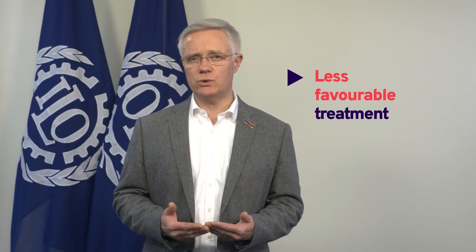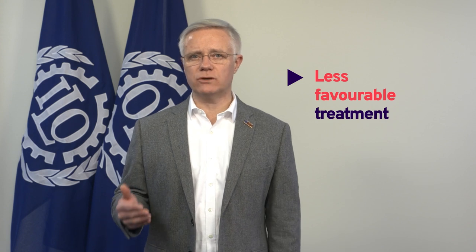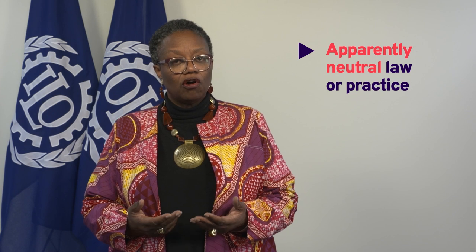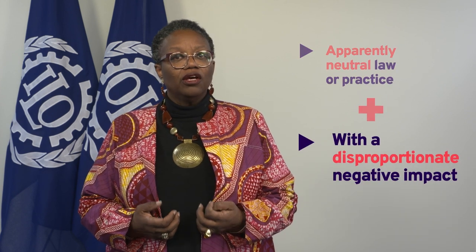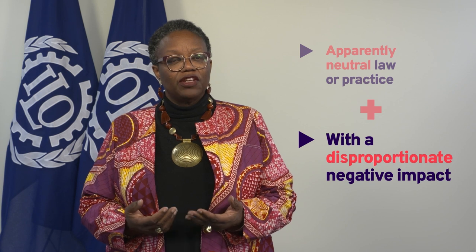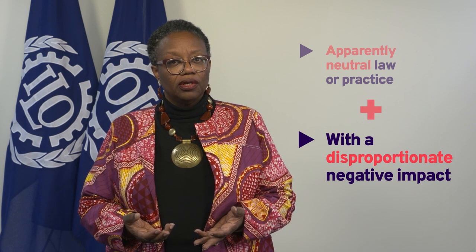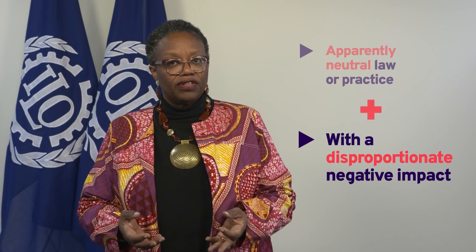Discrimination can be direct or indirect. Direct discrimination is when a less favourable treatment is imposed on certain persons based on one or more of the prohibited grounds. Whereas indirect discrimination is an apparently neutral law or practice which has a disproportionate negative impact on a particular group of persons with no objective job-related justification.